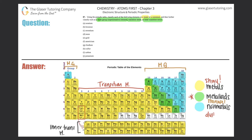So to summarize: main groups are groups 1, 2, and 13 through 18; transition metals are groups 3 through 12; and inner transition metals are the two periods on the bottom. Specifically, IUPAC doesn't classify group 12 as a transition metal group, but for most textbooks — including this one — it is classified as a transition metal, so we'll go with that.